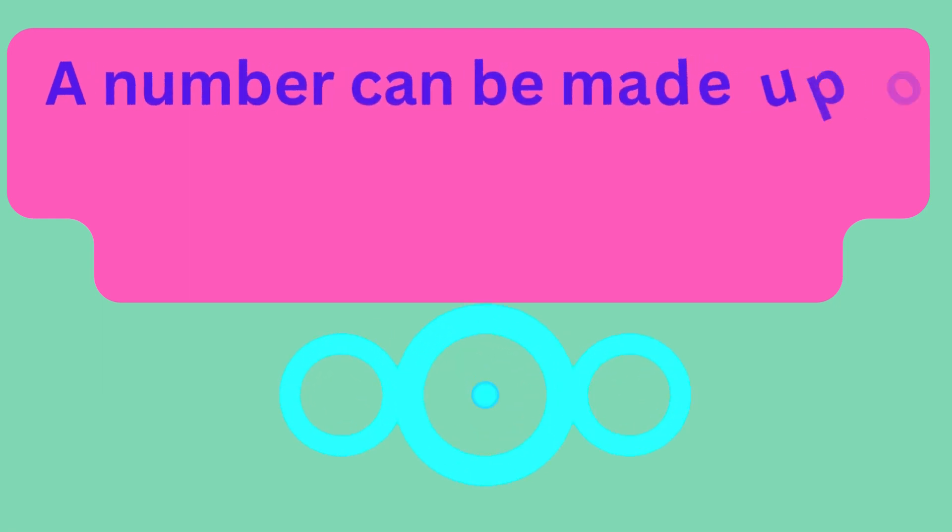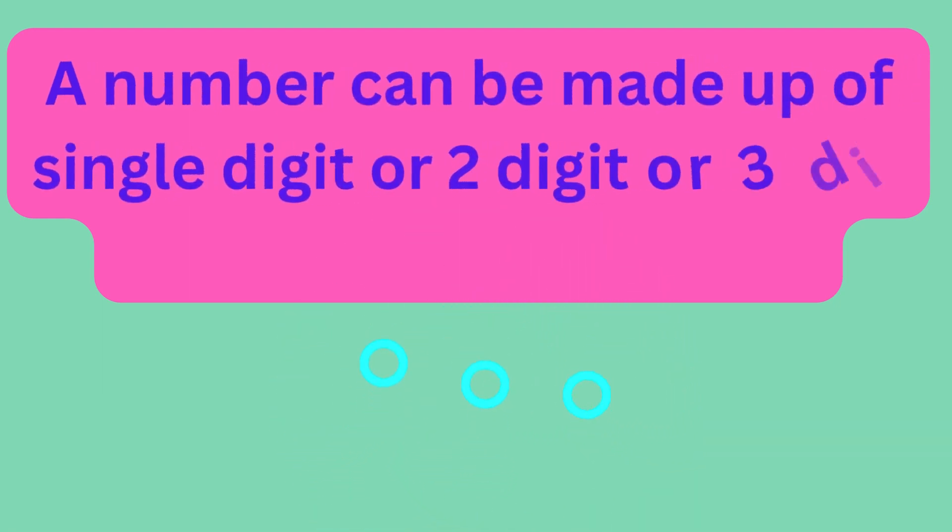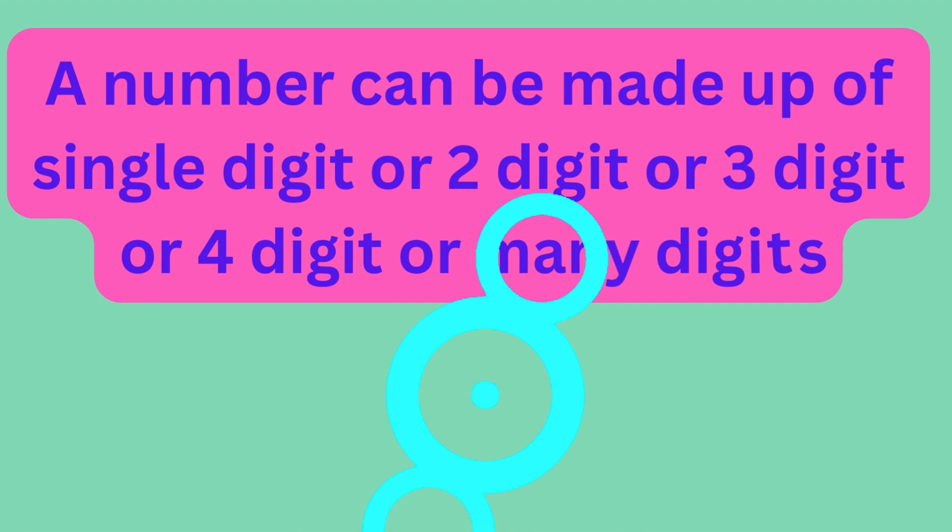So kids, now we know that a number can be made up of single digit or 2-digit or 3-digit or 4-digit or many digits. Remember, digits are just little symbols that help us talk about numbers. They make math more fun and easy to understand. Hope you have learned about basics of digits. Keep counting kids.